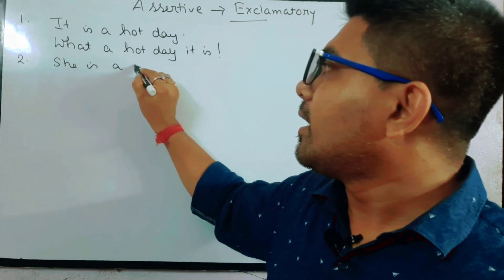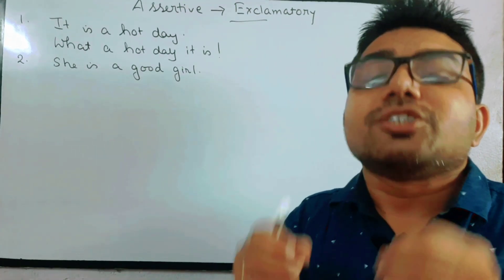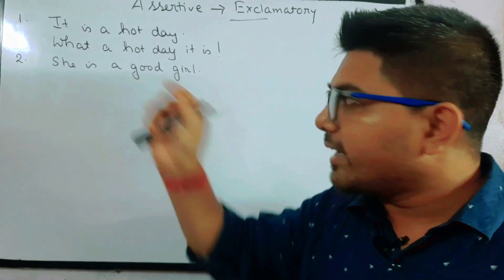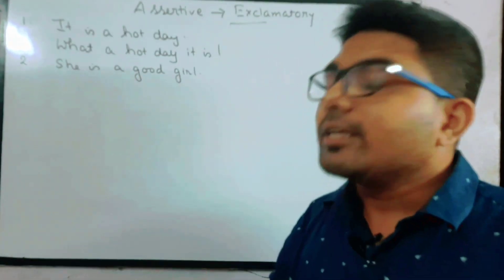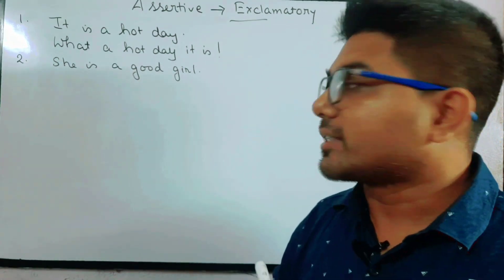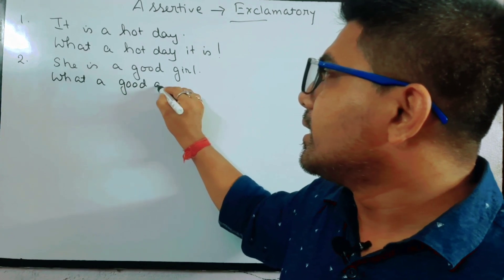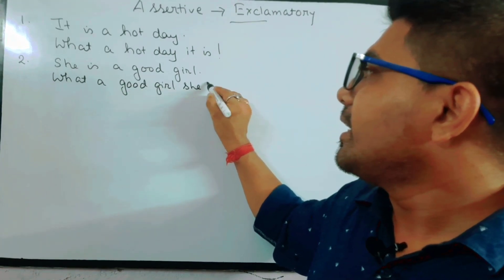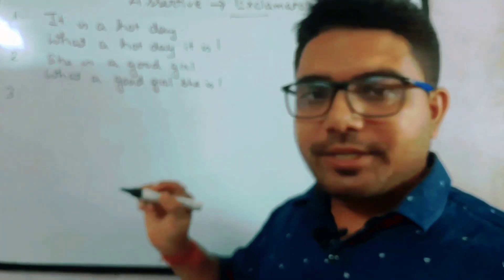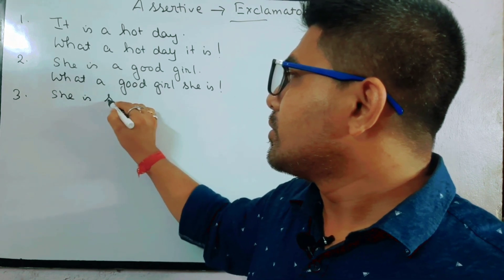'She is a good girl.' Kaisi girl? A good girl — again described with an article. So agar article ke saath kisi ko describe kiya gaya hai, we will start with 'What.' The exclamatory form becomes: 'What a good girl she is!'